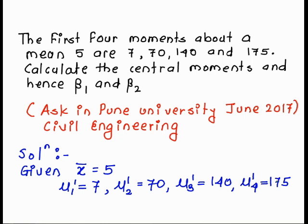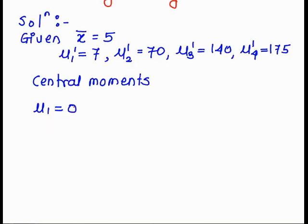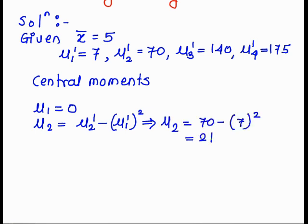We know the relation between the central moments and the raw moments, so we use those to calculate the central moments. The first central moment mu 1 is always equal to 0. Mu 2 is equal to mu 2 dash minus mu 1 dash the whole square. Substituting the values: 70 minus 7 squared gives mu 2 equal to 21.